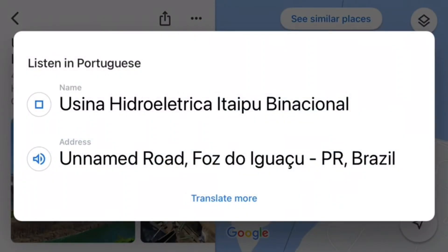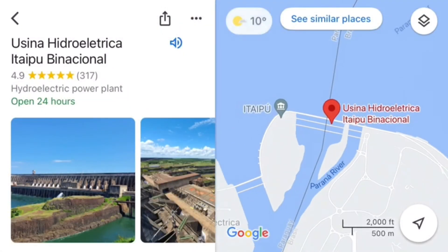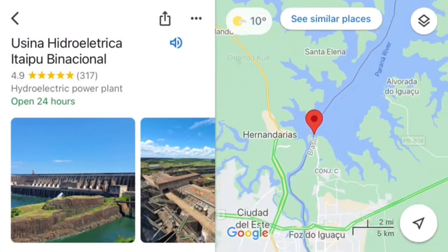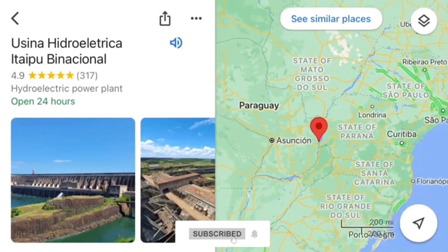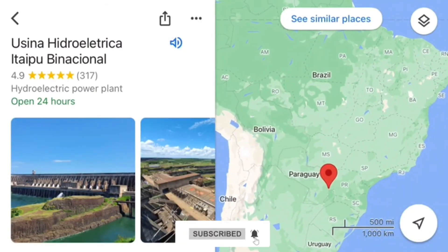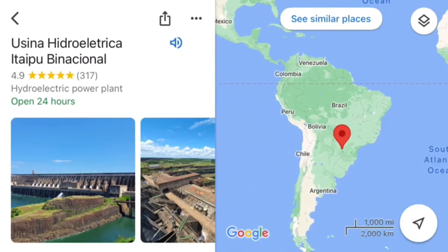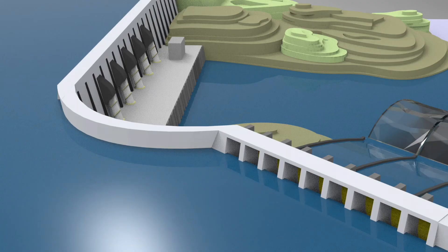Usina Hidroelectrica Itaipu Binacional. Hi! This is Itaipu Dam, a hydroelectric dam on the Parana River located on the border between Brazil and Paraguay. But how is hydropower generated? Let's see.